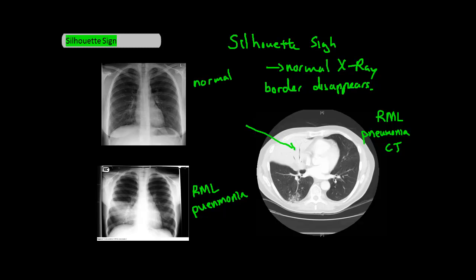I want to remind you that it's the right middle lobe that's in contact with the right heart border, which you can see here on CT. Pneumonia is basically a collection of inflammatory material in the lung that replaces the air that's normally there. So in essence, pneumonia has the same density as connective tissue.